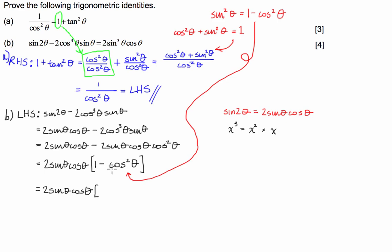Rather than writing 1 minus cos squared theta, I'm just going to put sin squared theta. Now from here if I multiply into that bracket, I'm going to get 2 sin squared times sin is sin cubed cos theta, which is equal to the right hand side. And that's part B done.